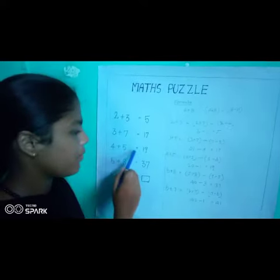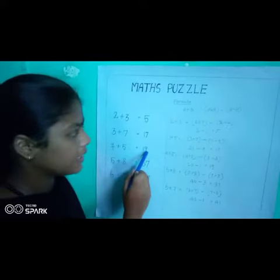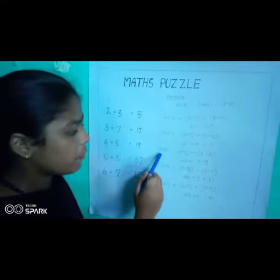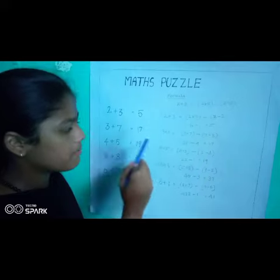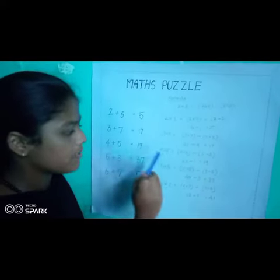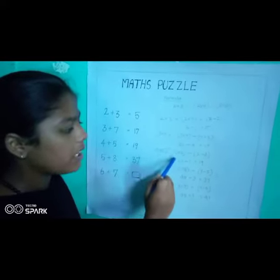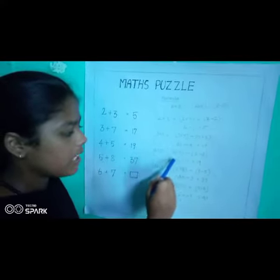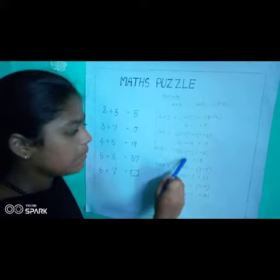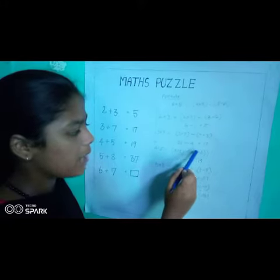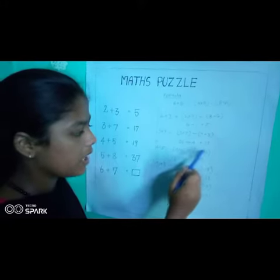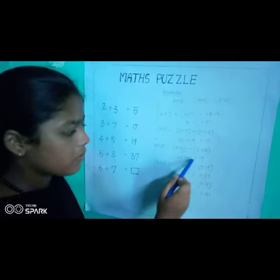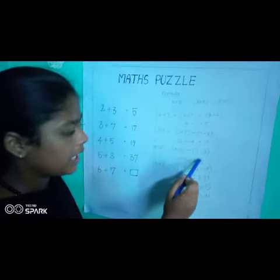4 plus 5 equal to 19. A value is 4 and B value is 5. 4 into 5 equal to 20, minus 5, minus 4, equal to 1. 20 minus 1 equal to 19.